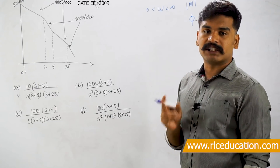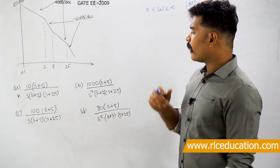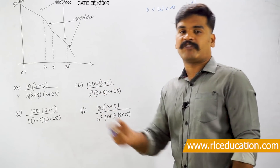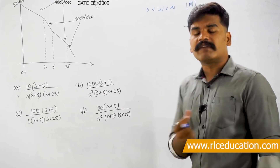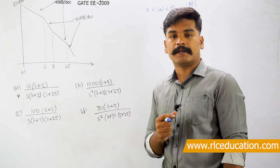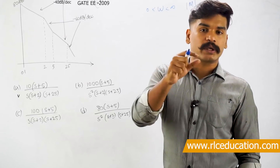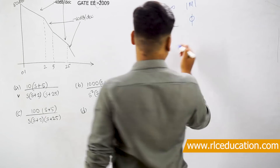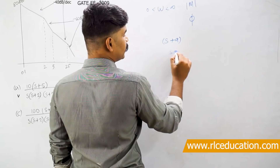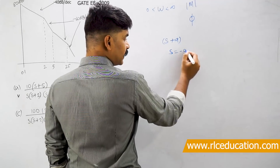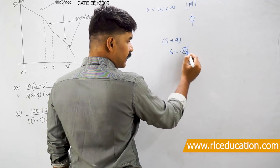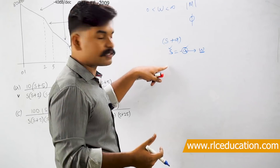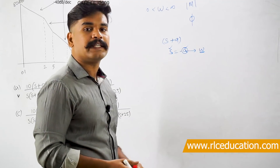In the Bode magnitude plot we plot the magnitude of the system at certain corner frequencies. Corner frequencies are nothing but the frequency at which a pole or zero gets activated — where it starts showing its response in the system. For example, if there is a pole at (s + a), then s = −a, and the value 'a' is the omega or frequency where this pole exists and starts functioning. That frequency is called the corner frequency.